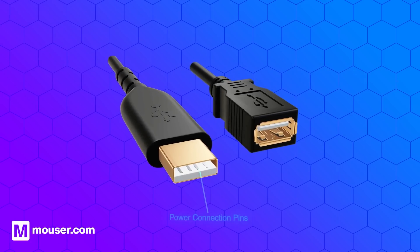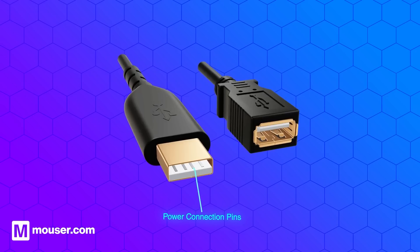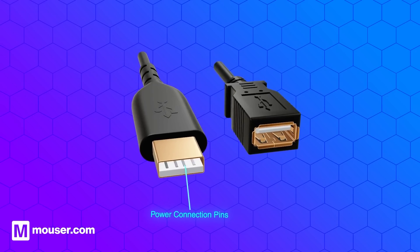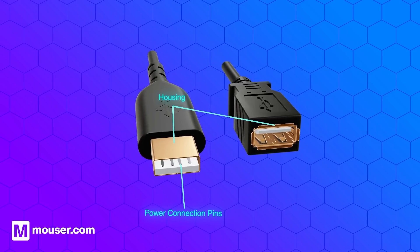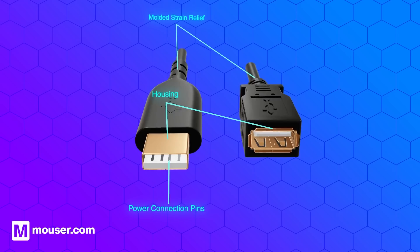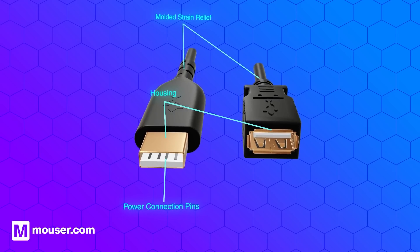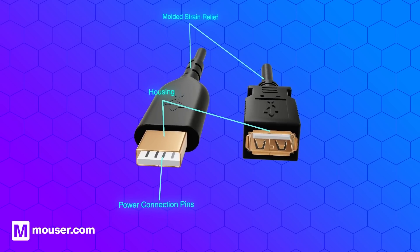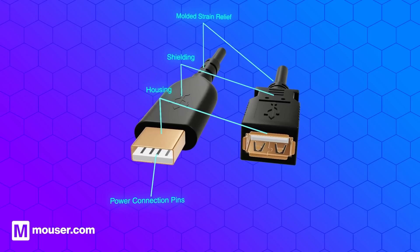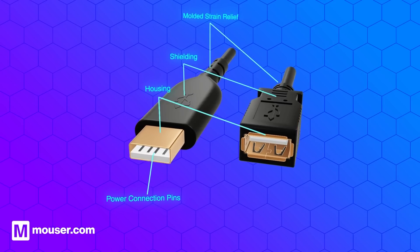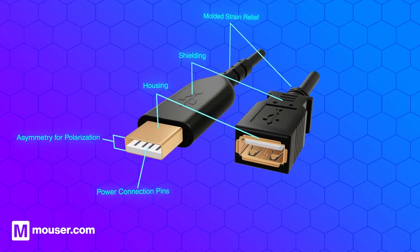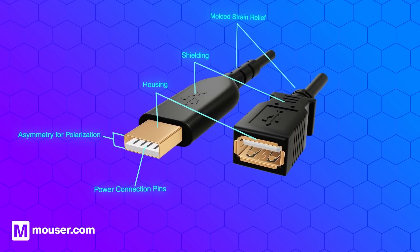They typically include connector pins to carry the signal and power, a housing to hold the pins in position, strain relief to protect the attached cable, shielding to prevent electrical noise, and mechanical keying or polarisation to ensure correct connection.